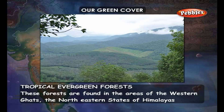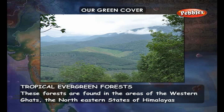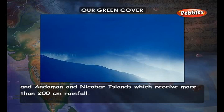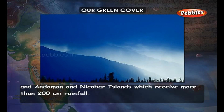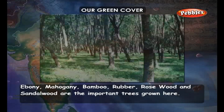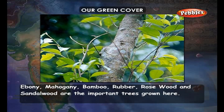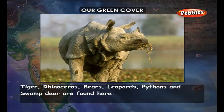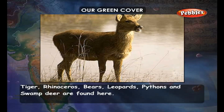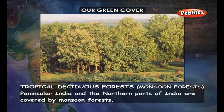Tropical Evergreen Forests are found in areas of the Western Ghats, the northeastern states, the Himalayas, and the Andaman and Nicobar Islands, which receive more than 200 centimeters of rainfall. Ebony, mahogany, bamboo, rubber, rosewood, and sandalwood are important trees grown here. Tiger, rhinoceros, bears, leopards, pythons, and swamp deer are found here.